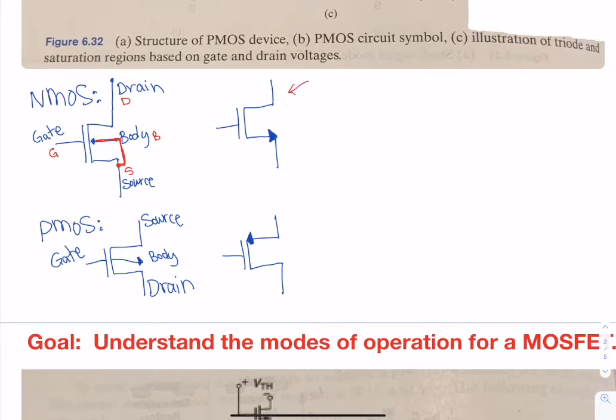This is the symbol that you're going to typically see. Again, this assumes that the body is already connected to the source. How you identify the difference between the NMOS and the PMOS is just like with the BJT: the arrow side. The arrow side will always be connected to the source for both PMOS and NMOS.